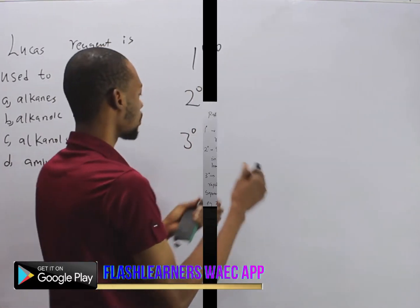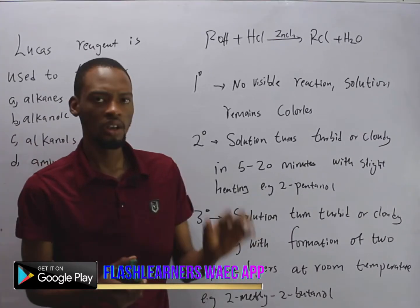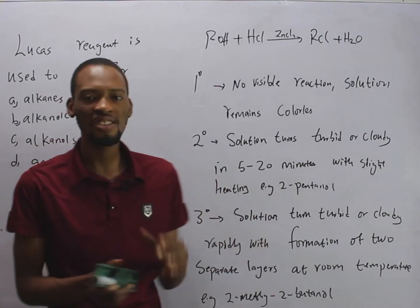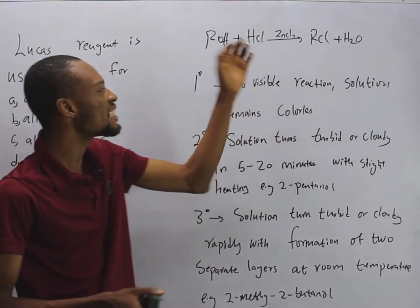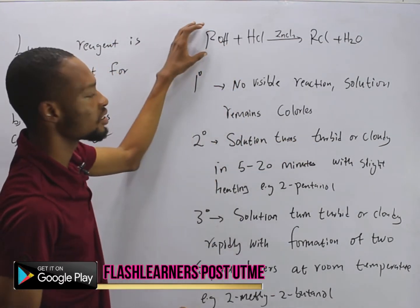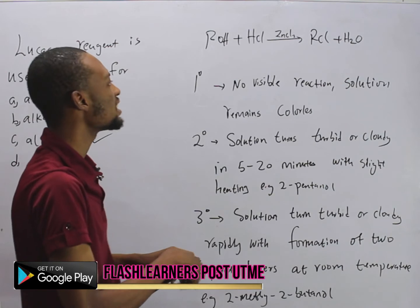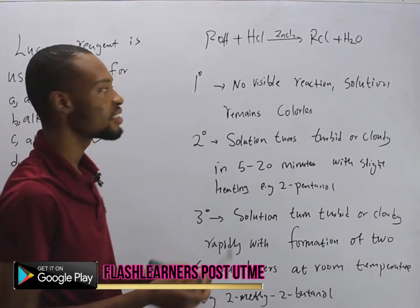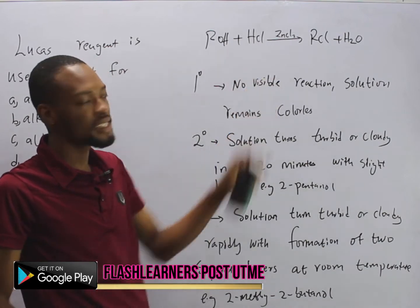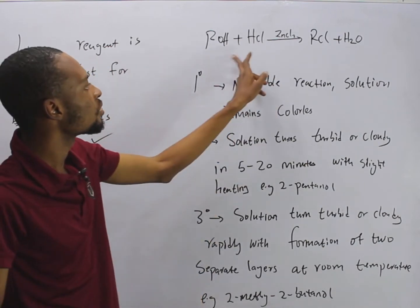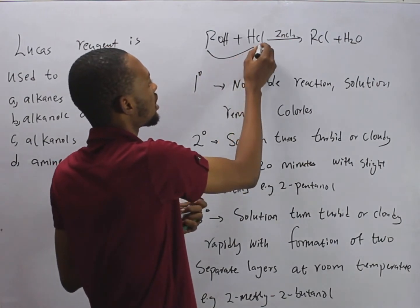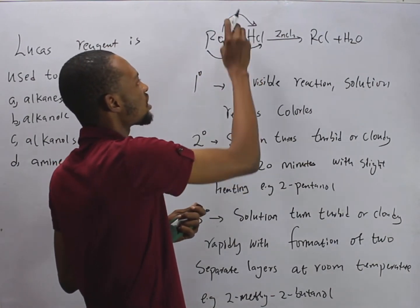Lucas reagent is simply a solution of anhydrous zinc chloride in concentrated hydrochloric acid. The R group — the alkyl group — can be anything: CH₃, CH₂, and so on. When it reacts with HCl, the chlorine and the hydroxy functional group react with hydrogen to form water.